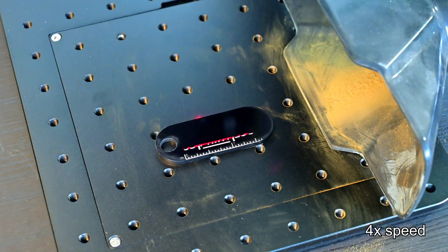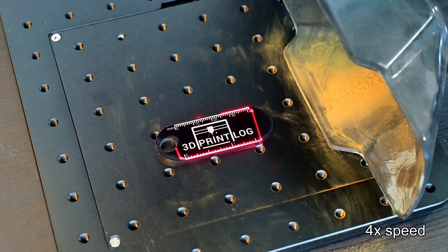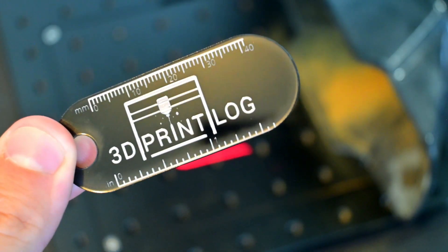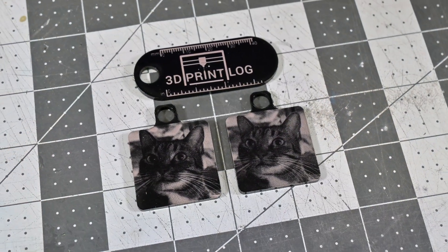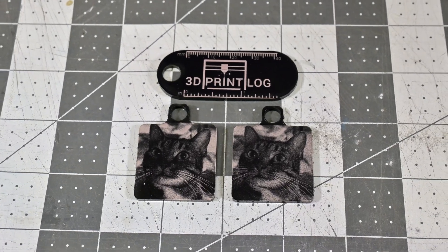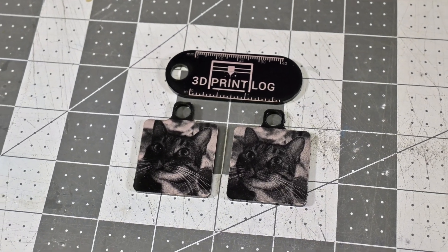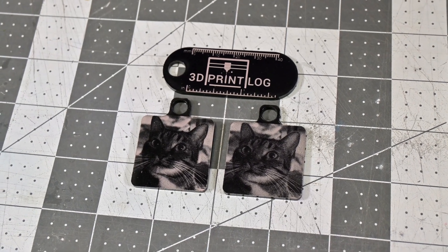The F1 Pro can also engrave on plastics. It creates a high contrast white engraving on black acrylic. These 3D print log keychains look great. The plastic is engraved without bubbling, and even the small text and tick marks on the ruler look good. Image engraving also looks awesome on the F1 Pro. I had to adjust the brightness and contrast a few times to find the right settings, but eventually I got some pretty good results using a picture of my cat Sven.